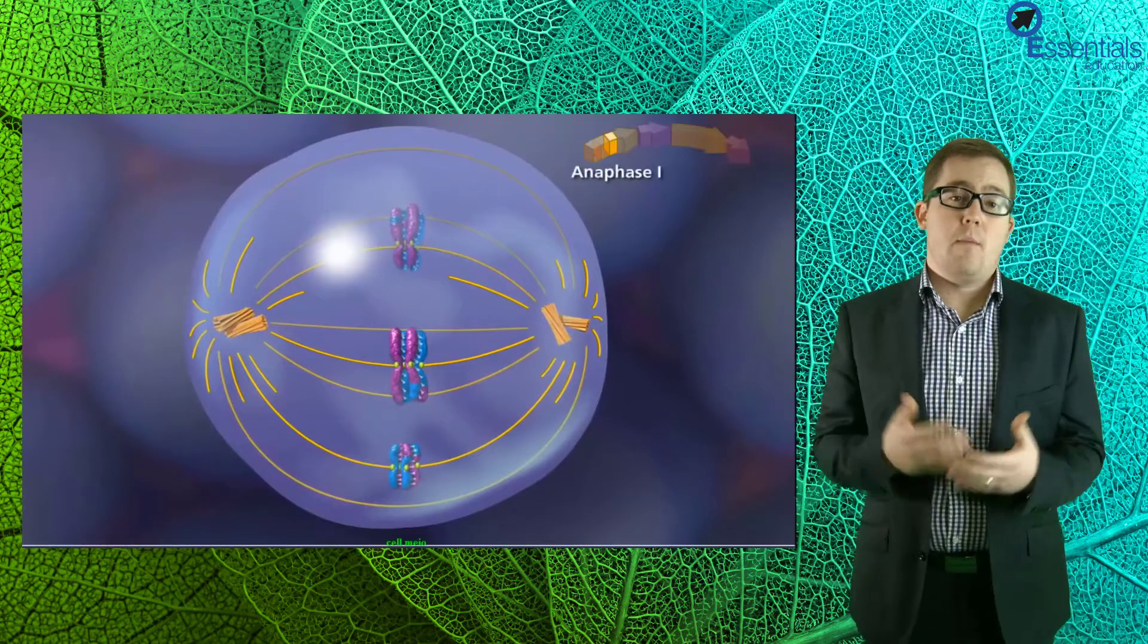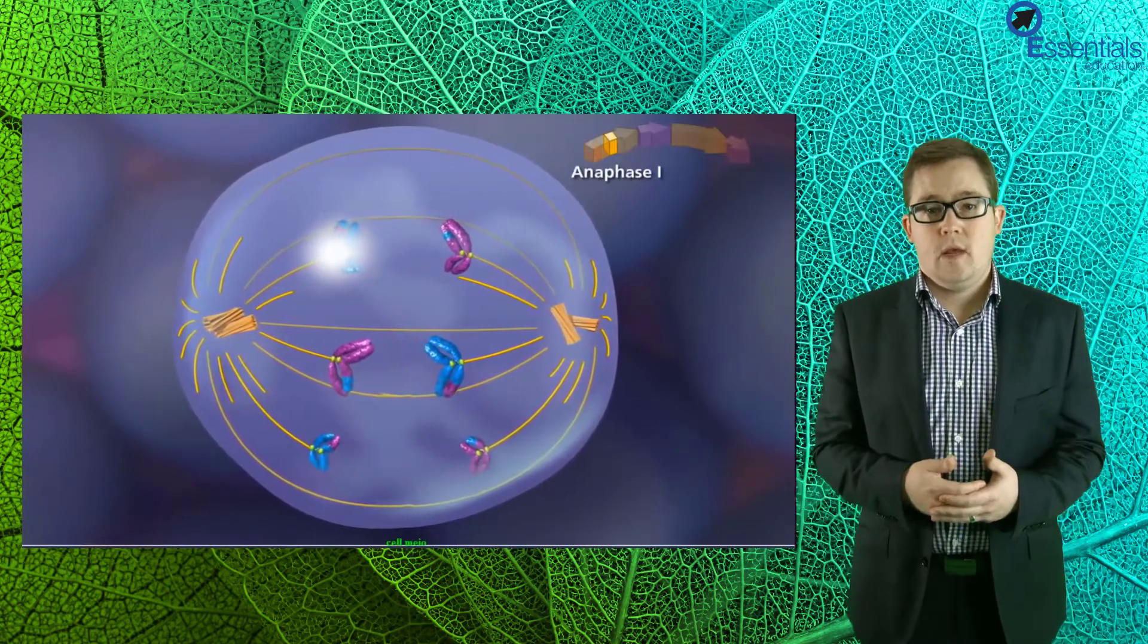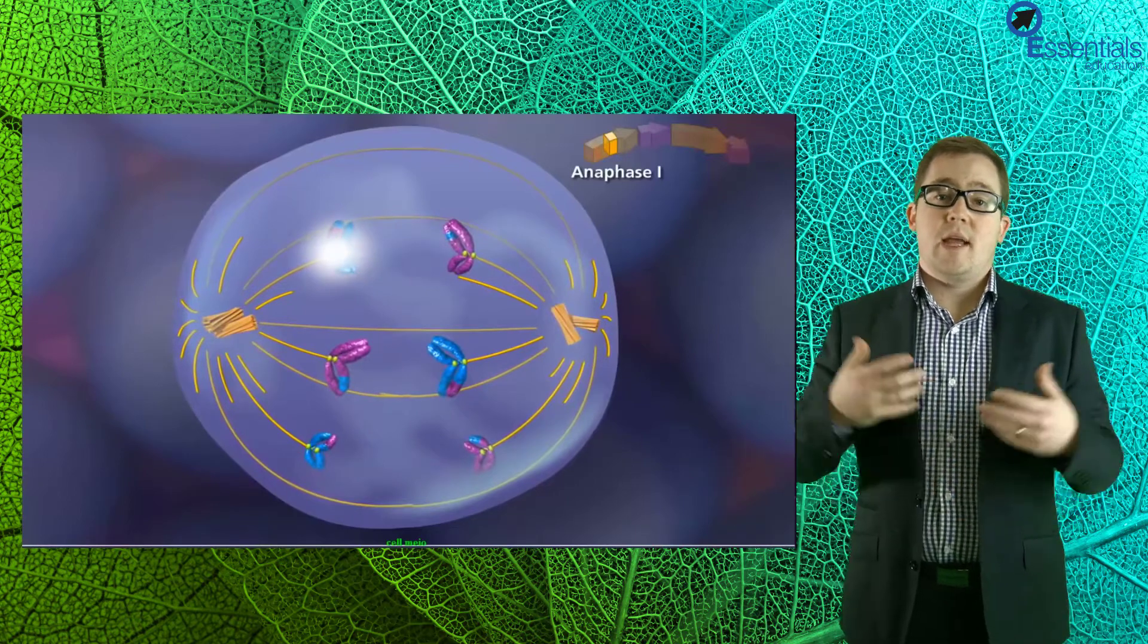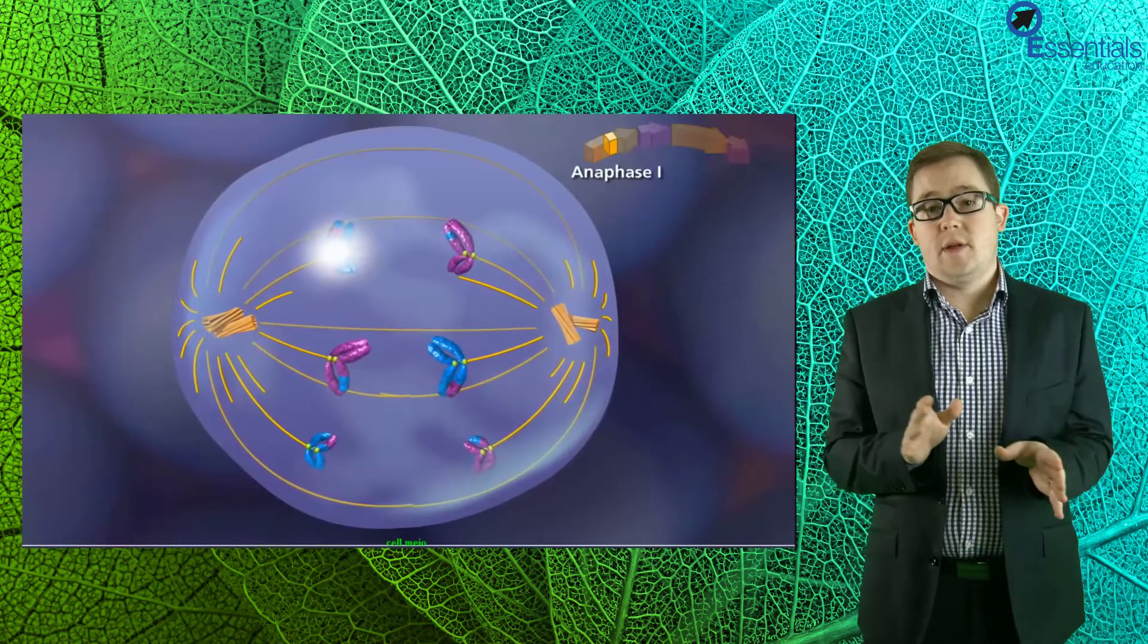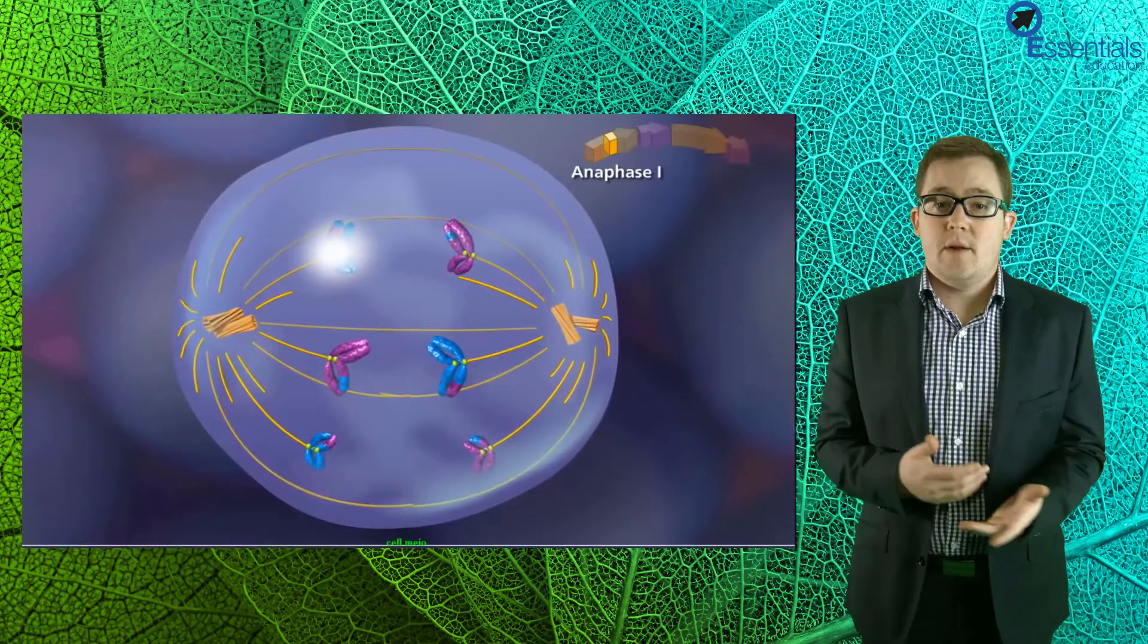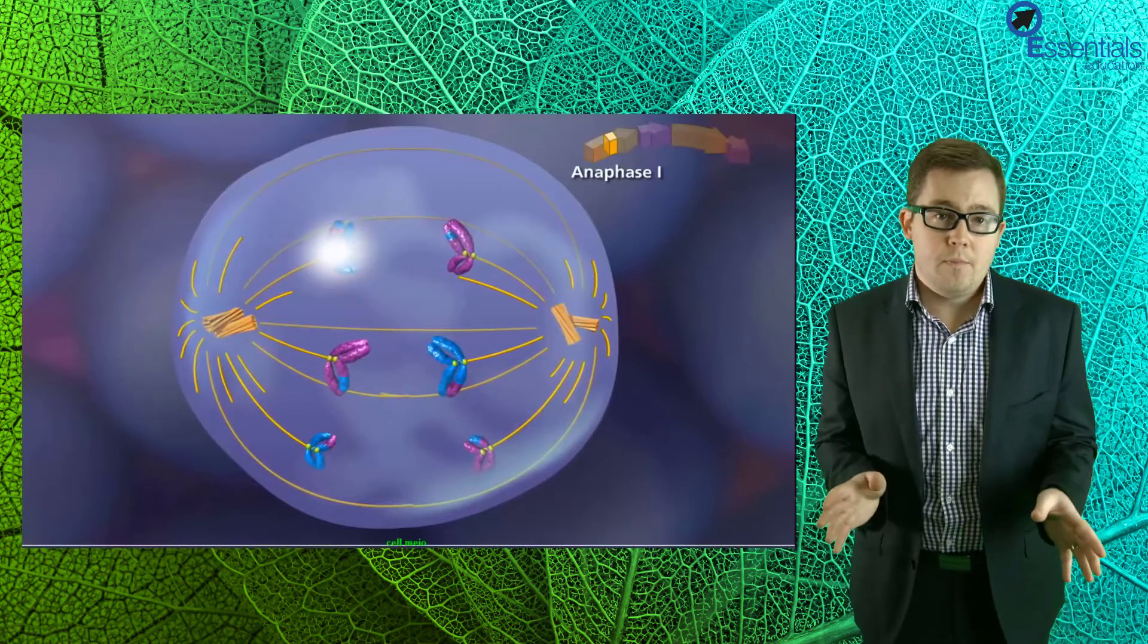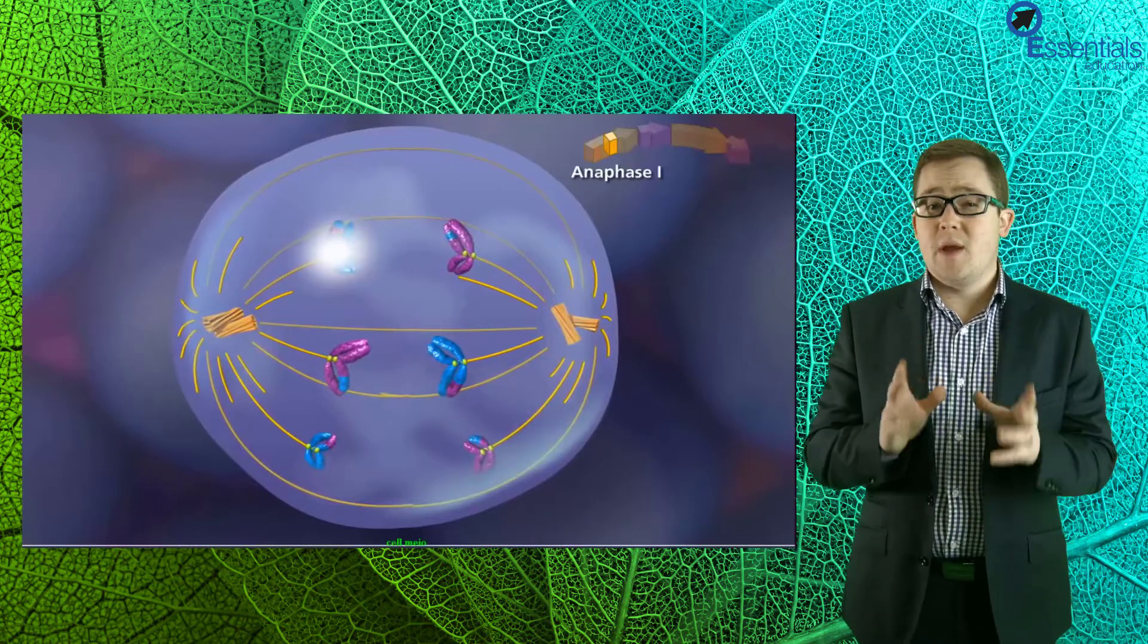Now in anaphase I, the homologous chromosomes are separated and moved to the opposite ends of the cell. In our analogy, this would be like your teachers separating all the partners on the dance floor and making you sit at opposite ends of the room. Now because you aligned randomly on the dance floor, there will be a mix of boys and girls at either end of the room but importantly no one will be with their partner.